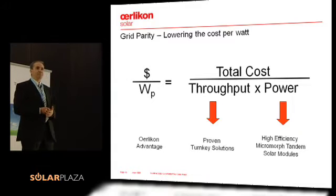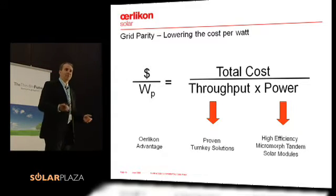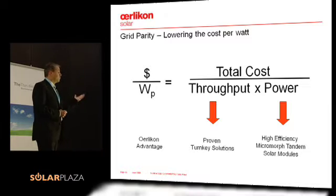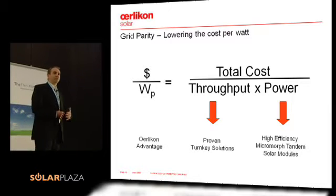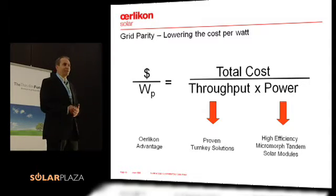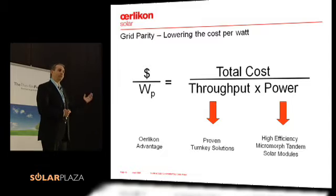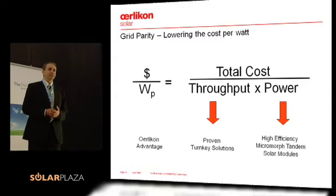If I can get on the same square meter the double power, the material cost just went down half. Throughput, same thing — if we can get double the amount of square meters through a production line without increasing cost, the cost per square meter of margin produced just went half. For us, these are the two biggest wheels.